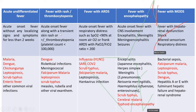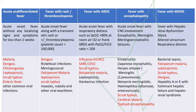Fever with rash and thrombocytopenia also includes leptospirosis and scrub typhus. Fever with ARDS presents with acute onset fever with respiratory distress; common causes are influenza, SARS-CoV-2, scrub typhus, and falciparum malaria. Fever with encephalopathy involves CNS, presenting as encephalitis or meningoencephalitis, including causes of meningitis and viral encephalitis.